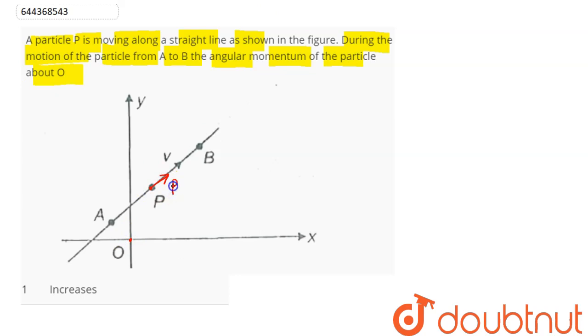The velocity is along line AB, so linear momentum will be here along the line AB with magnitude M into V vector.